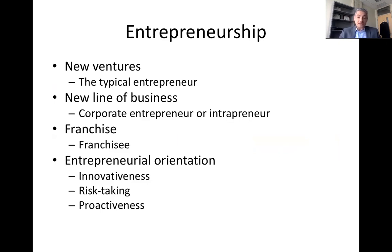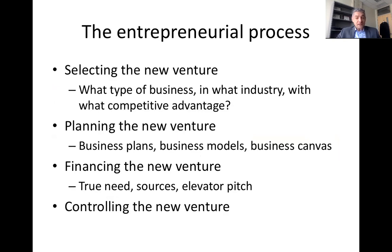The entrepreneurial process consists of four major steps. First is selecting the new venture — we need to answer what type of business, what industry, and what competitive advantage we're going to have. Second is planning the new venture, which involves traditional business plans, more recently developed business models, or even a business canvas — a simple representation of what you're going to do and how you're going to make money. Third is financing the new venture — you have to figure out how much money you actually need and whether you need external money.